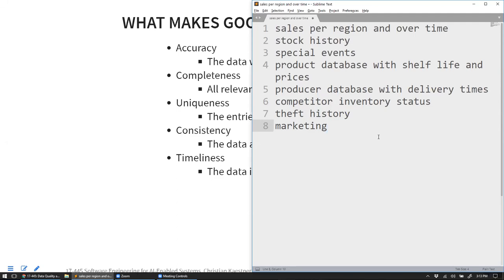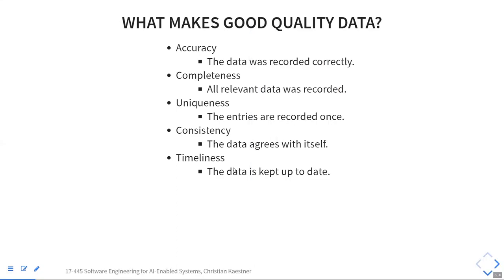One consistency example: the inventory says 20 items were sold but only 10 were ever purchased. Another: one source groups all chili peppers together while a different source tracks individual varieties. Different data sources may use different terms. For timeliness — what's a plausible reason data might be out of date? Many supermarket inventory systems still use very old software, and when systems break down, restoring data takes a long time.